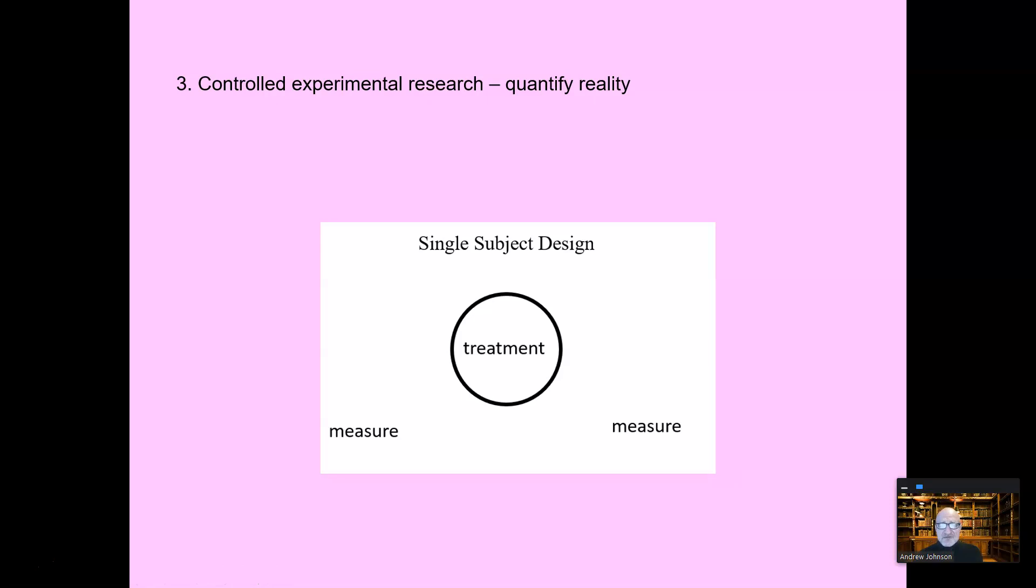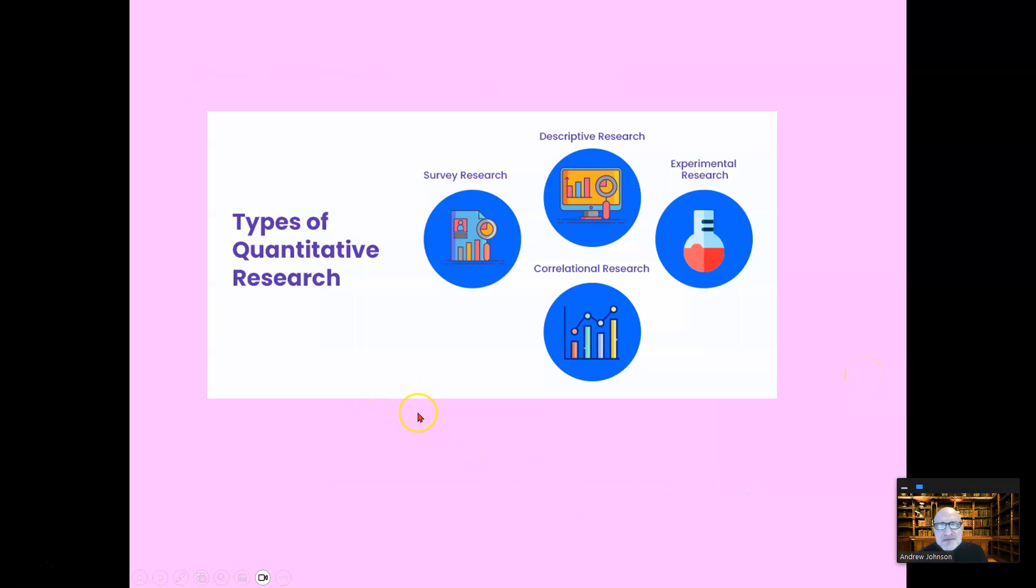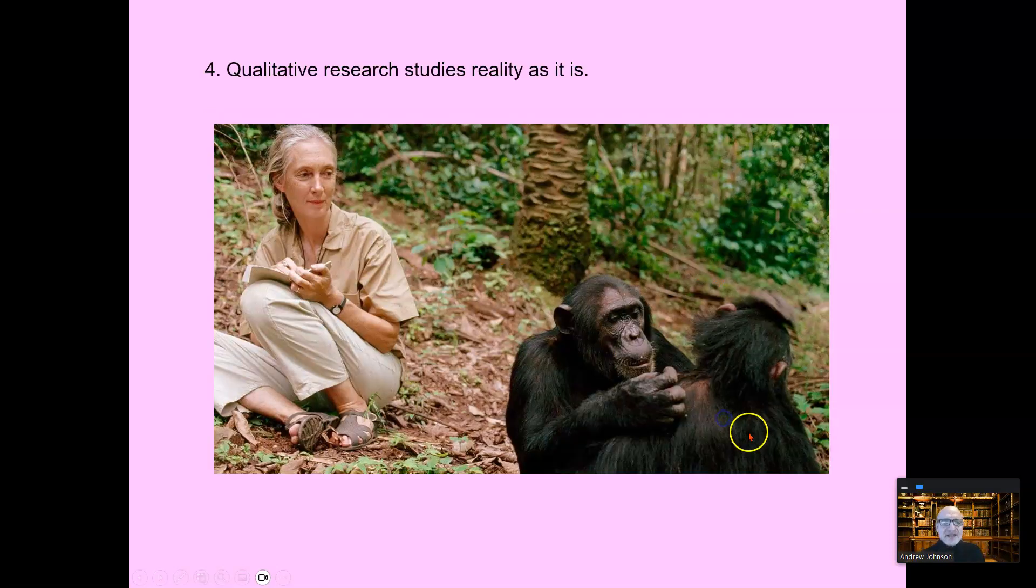Single subject design, similar. You have one group and you have a measure up front, give the treatment, a measure at the end. If there's a statistically significant difference between pre and post, you can say with some degree of confidence that the treatment may have caused the difference. Of course, in education, there's a lot of different variables. Maturity is one of them. Simply by being exposed or growing during the year, they are going to grow in whatever subject area. That's why sample sizes, the number of students in the sample, all impacts the quality of that study. There are different types of quantitative research. Quantitative, you try to quantify reality.